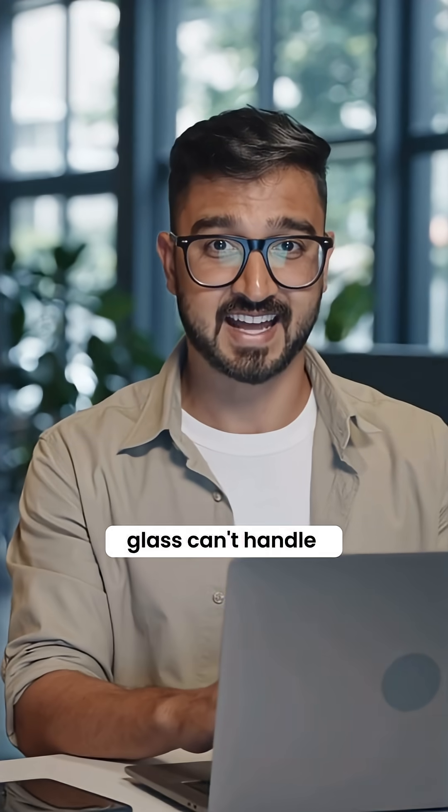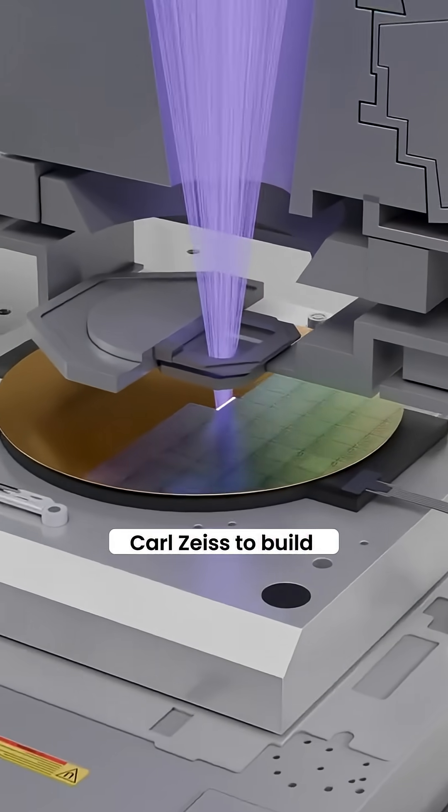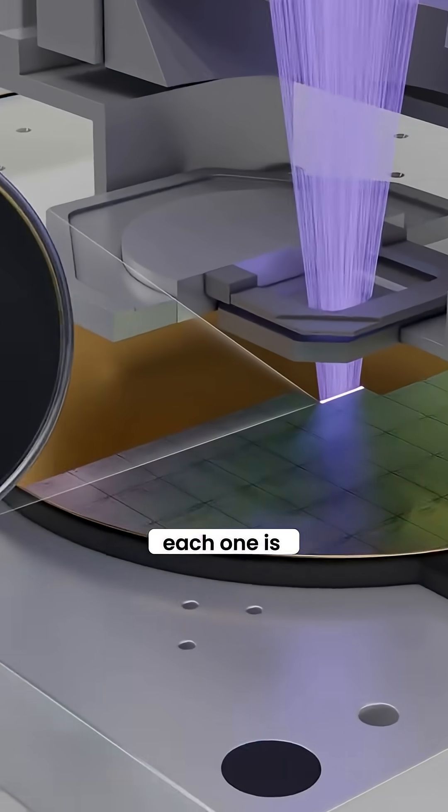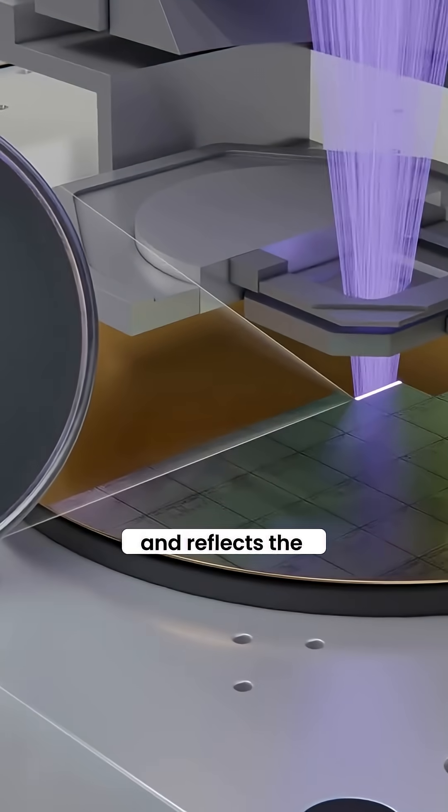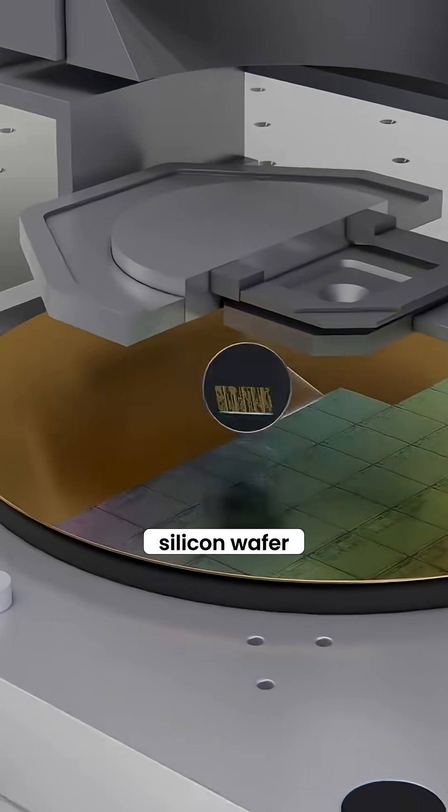Since regular glass can't handle that light, ASML worked with Carl Zeiss to build ultra-precise mirrors. Each one is engineered at an atomic level and reflects the light dozens of times before it hits the silicon wafer.